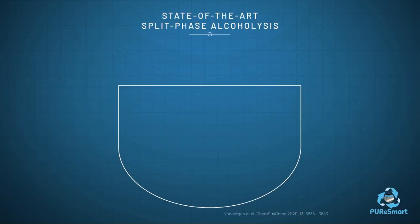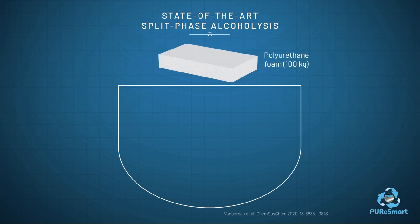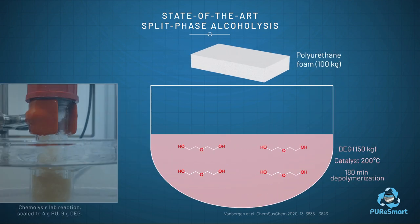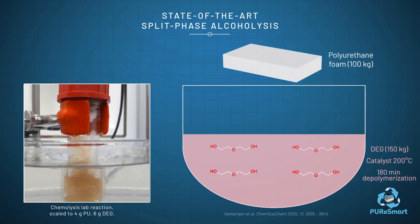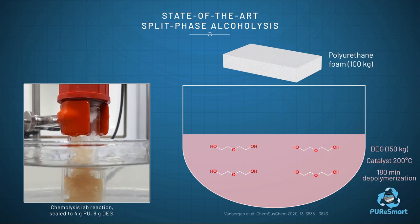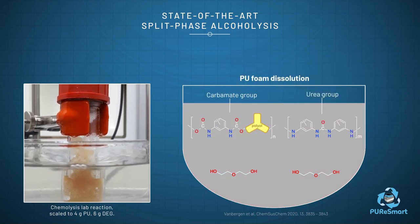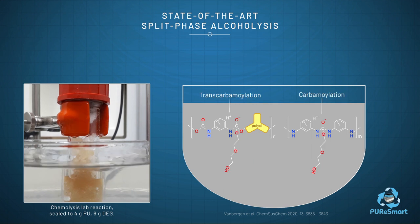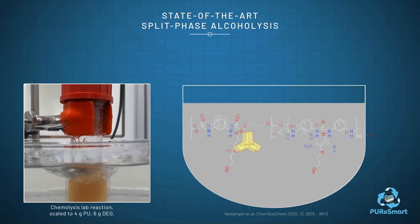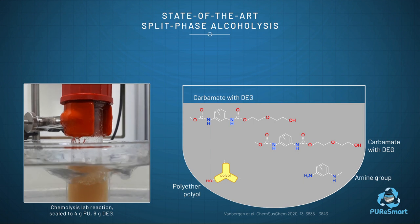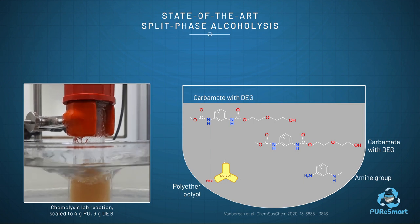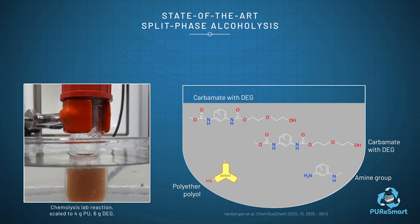Split-phase alcoholysis is the most promising chemolysis method, comprising the dissolution and depolymerisation of shredded foam in a polyfunctional alcohol, such as diethylene glycol, in the presence of a catalyst, at around 200 degrees Celsius. The depolymerisation occurs by alcoholysis of the carbamate and urea groups with diethylene glycol, resulting in the formation of carbamates with diethylene glycol and release of polyether polyol and amine groups.